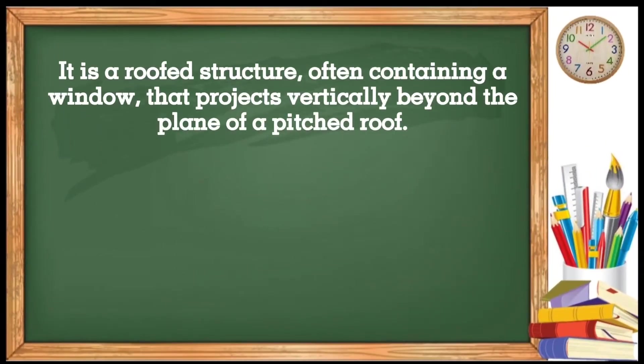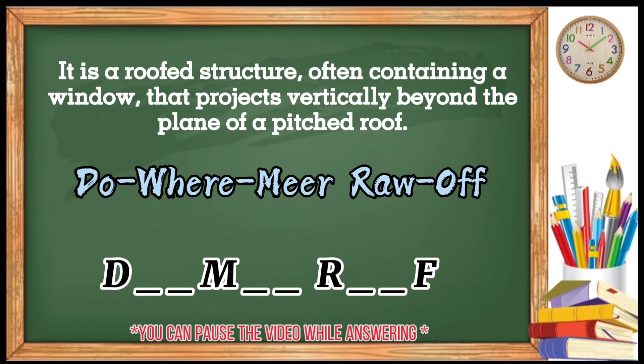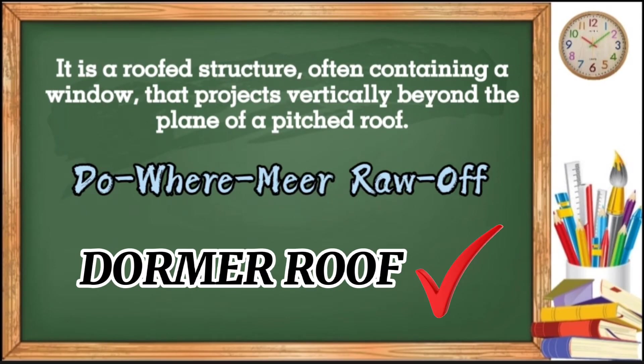Last statement. It is a roof structure often containing a window that projects vertically beyond the plane of a pitched roof. Here is the clue. Do, where, mere, row, off. Do, where, mere, row, off. Can you guess what is the answer? Very good! This is a dormer roof.